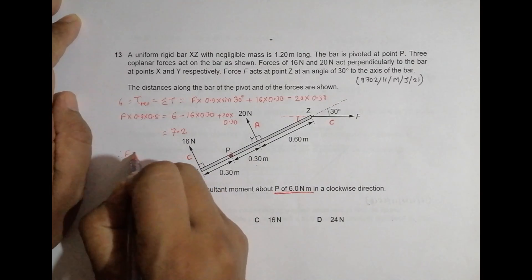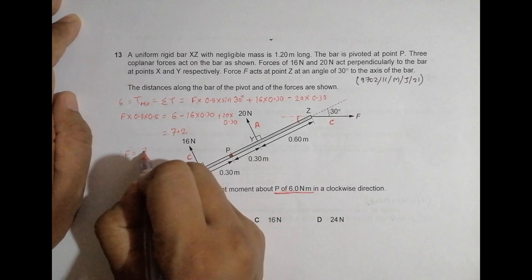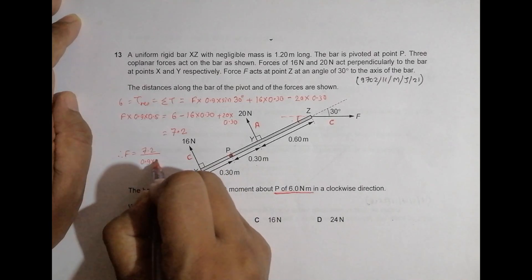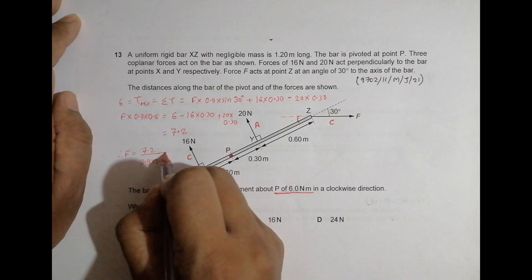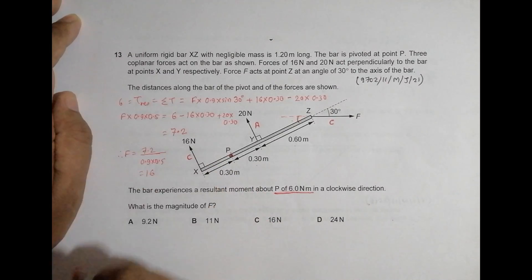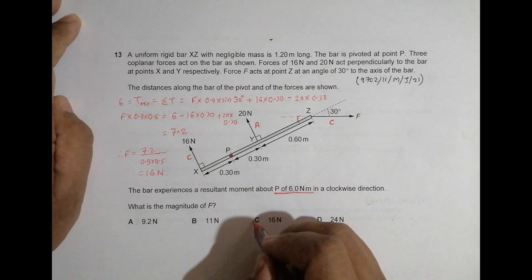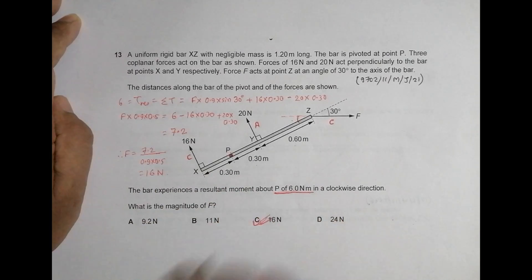So therefore, F is equal to 7.2 divided by 0.9 into 0.5, and this gives us 16 Newtons. So I think if I remember, 7.2 divided by bracket 0.9, yeah 16 Newtons. So the answer is somewhere here, so C is the correct choice.